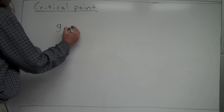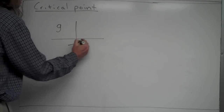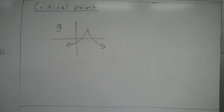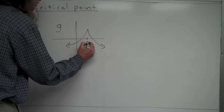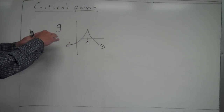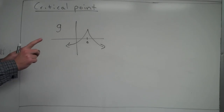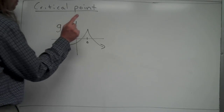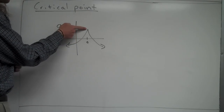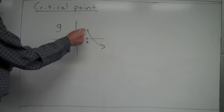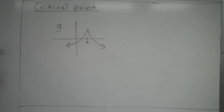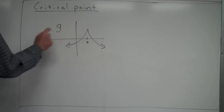For the undefined-derivative example visually, consider a graph of g that has a sharp corner or pointy spot at x = a. There's no place where the slope is 0, so the derivative is never 0. But at x = a, the derivative is clearly not defined. Yet, on the graph of g at x = a, there is a point — so g is defined there. Therefore, there is a critical point at x = a on this graph.